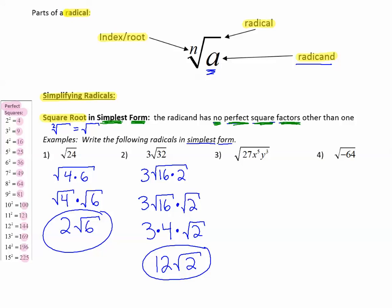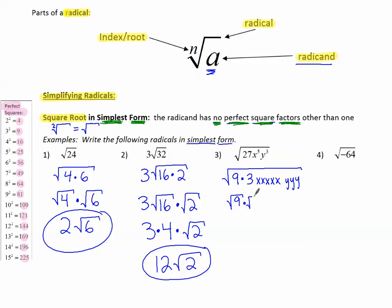Number 3: square root of 27x⁵y³. Starting with the number: 27 is not a perfect square, but 9 is and it divides evenly into 27. So we rewrite 27 as 9 times 3. For the variables, x to the 5th means five x's multiplied together, and y cubed means three y's multiplied together. We then take the square root of 9 times the square root of 3, times the square root of all those x's, times the square root of all those y's. The square root of 9 is 3.